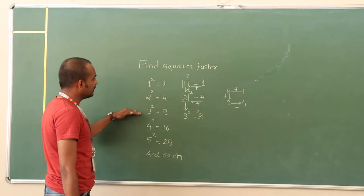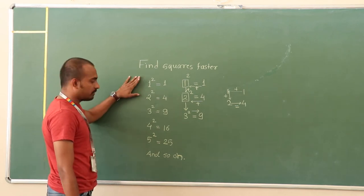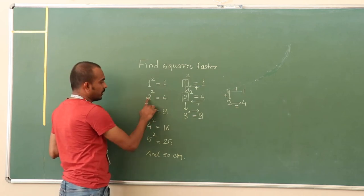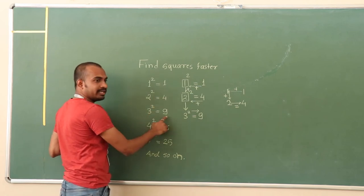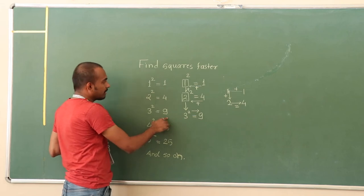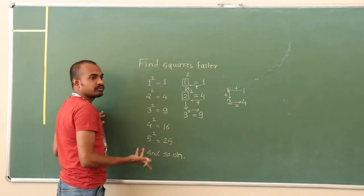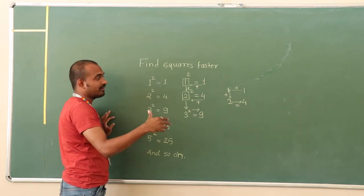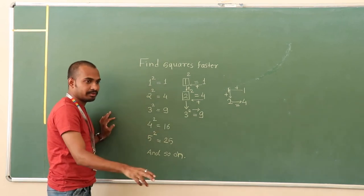You can see on the board I have written the squares of 1 to 5. We know square of 1 is 1, square of 2 is 4, square of 3 is 9. But what this pattern is for? This pattern shows you how to find the square of any consecutive number.